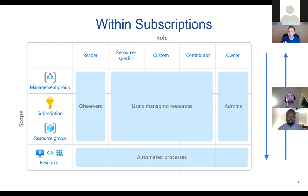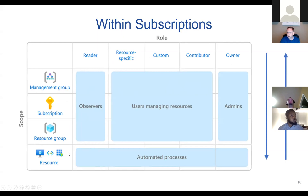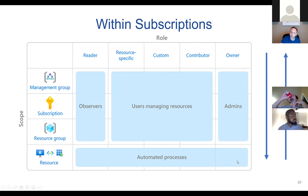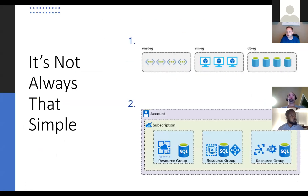Within subscriptions, permissions are handled top-down: from management group to subscription, to resource group, to resource. So if we have a VM, we can set permissions at the actual VM level — the resource level. That will not be inherited upward; it only works one way downward. Whatever we set at the management group, if we add somebody as an owner to the subscription, they'll have ownership rights all the way down to the resource. But it's not always that simple.